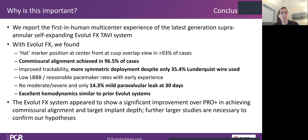In summary, the multicenter early experience with limited market release shows improved commissural alignment at 96.5%, despite only 35% Lunderquist wire use, mild paravalvular leak at 14.3%, and excellent hemodynamics compared to prior Evolut systems. Thank you very much for your attention. I hope you find this presentation helpful in terms of the Evolut FX system, procedural deployment, and the early data we've accumulated.